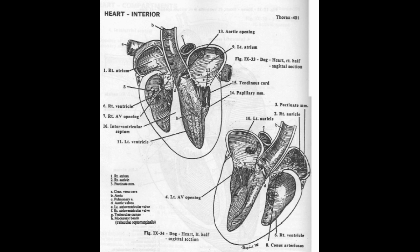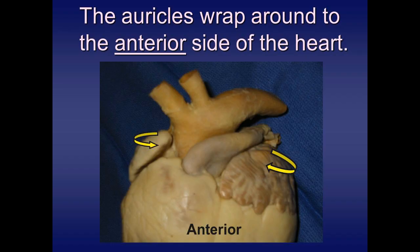The left ventricle pumps oxygenated blood to the whole body and forms the caudal boundary of the heart and its apex. There are two auricles in the heart — right auricle and left auricle — both clearly visible from the left side. The right auricle is present cranially to the pulmonary trunk and the left auricle is caudal to it.